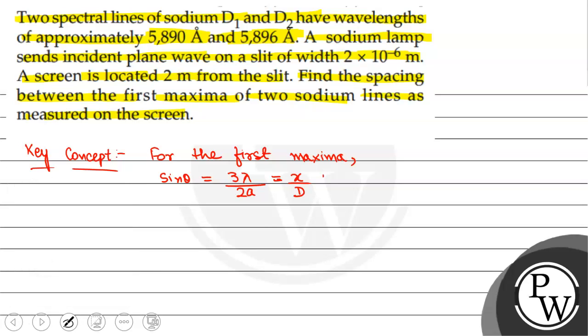Given data: λ₁ = 5890 angstroms, λ₂ = 5896 angstroms, slit width a = 2×10^-6 meters, and screen distance D = 2 meters.